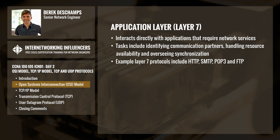Let's take a look at the individual layers starting at the top. The application layer, or layer 7, is the closest layer to the end user. This layer interacts directly with software applications that require network services, by handling things like identifying communication partners, handling resource availability, and overseeing synchronization. For example, if a web browser wants to download a web page, it can use the application layer protocol HTTP to gain access to network services.